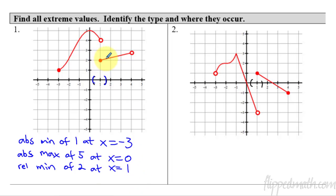Continuing along, we get to an open circle. An open circle means we never actually get close enough to it for it to be a min or max. And besides, it's on an endpoint—it's not an absolute max because we already found that, and it can't be a relative extrema on the endpoint.